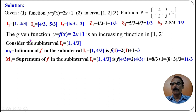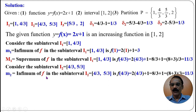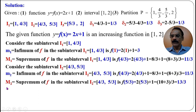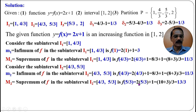For sub-interval I₂ = [4/3, 5/3]: since f is increasing, the infimum is m₂ = f(4/3) = 2(4/3) + 1 = 8/3 + 1 = 11/3. The supremum is M₂ = f(5/3) = 2(5/3) + 1 = 10/3 + 1 = 13/3.